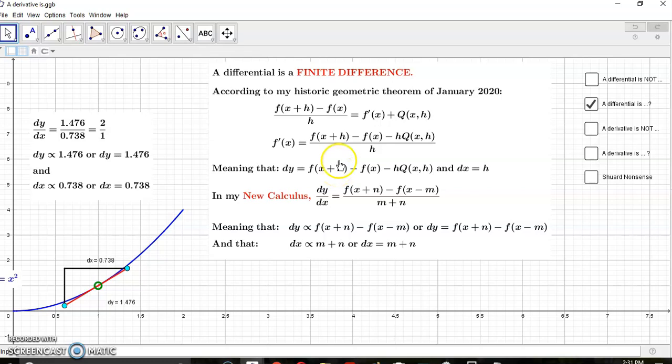And so this would give you a valid form of differential or finite difference, because that's all the differential is. It's a finite difference, there's nothing ethereal about it. Now in my new calculus, dy over dx is defined very rigorously, in fact it's 100% rigorous.